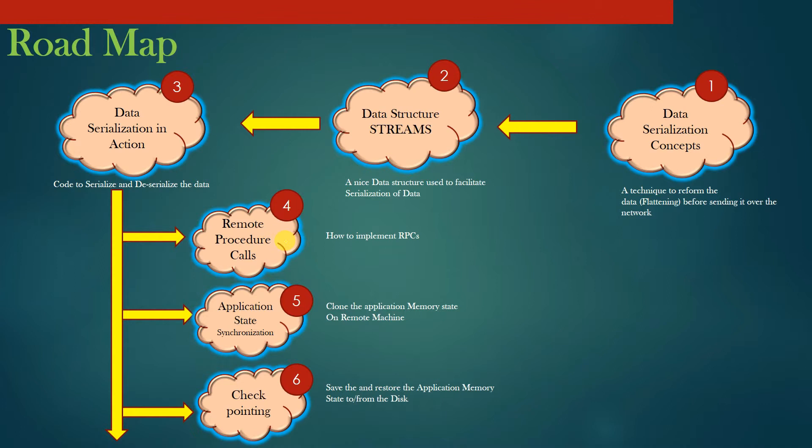Module 5 is regarding how to synchronize the application state. You will learn how to clone the application memory state from the local machine to a remote machine. Application state is defined as the set of all internal data structures kept in the heap memory of the application.